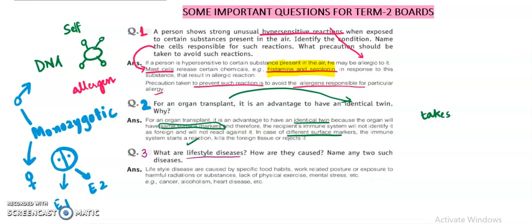You might have seen various people who suffer from diabetes, but their parents are not diabetic. This happens because of faulty lifestyle. People keep on sitting, eating all day without any exercise, which affects the body. Lifestyle diseases are caused by specific food habits, work-related posture, harmful radiations, lack of physical exercise, and mental stress.